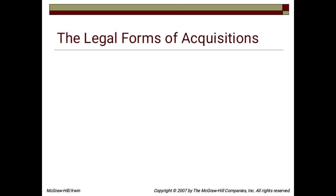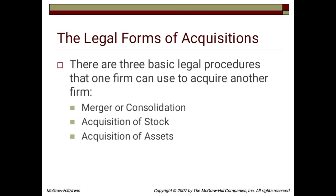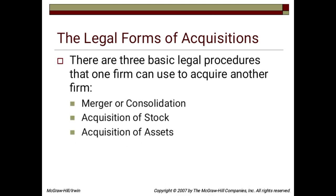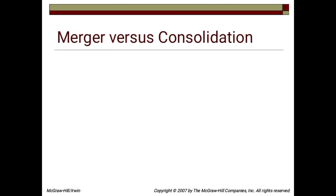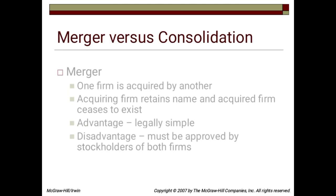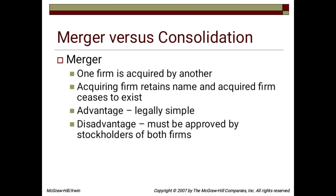The Legal Forms of Acquisition. There are three basic legal procedures that one firm can use to acquire another. The first is merger or consolidation. In a merger, one firm is acquired by another — the acquiring firm retains its name and the acquired firm ceases to exist. Advantage: legally simple. Disadvantage: must be approved by stockholders of both firms.